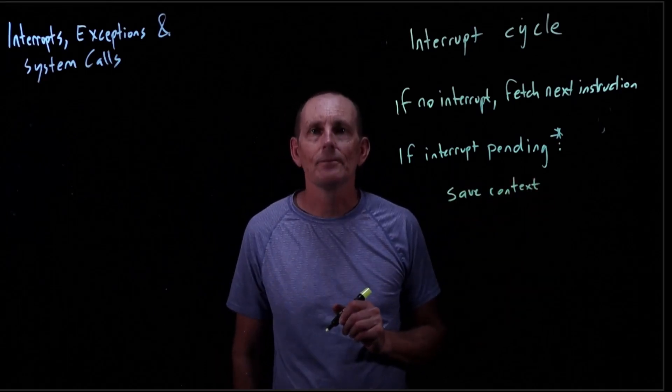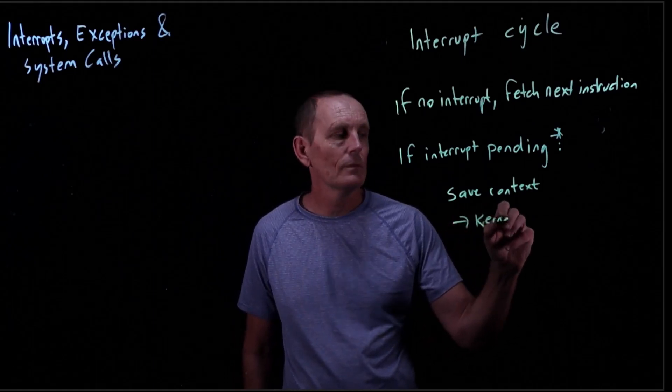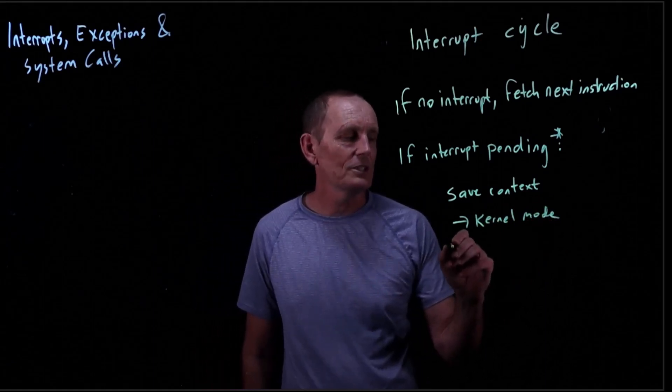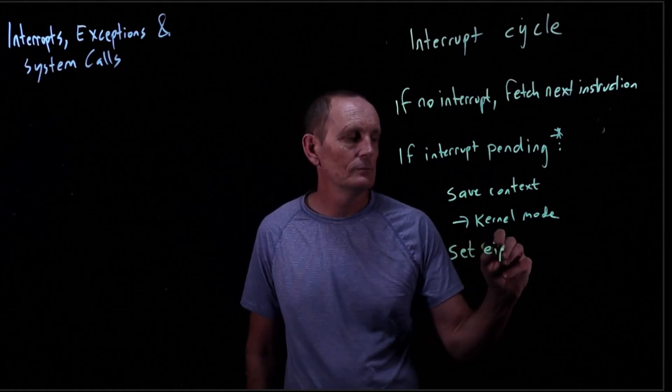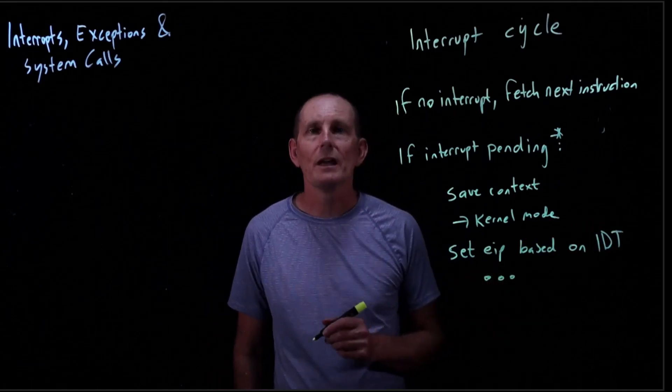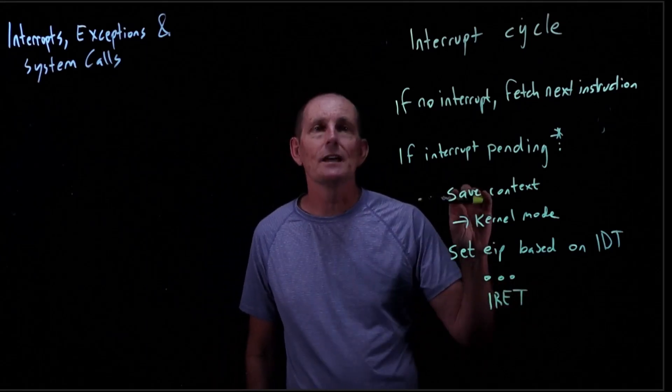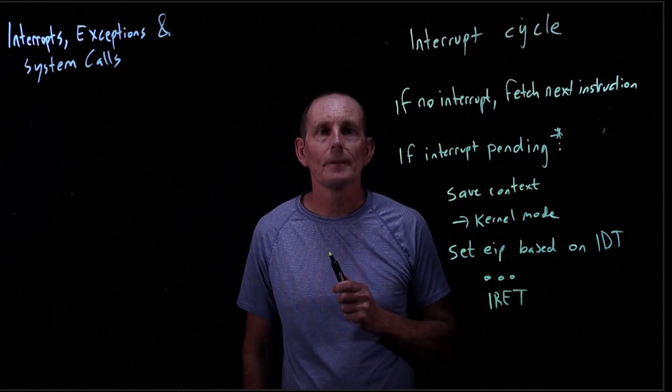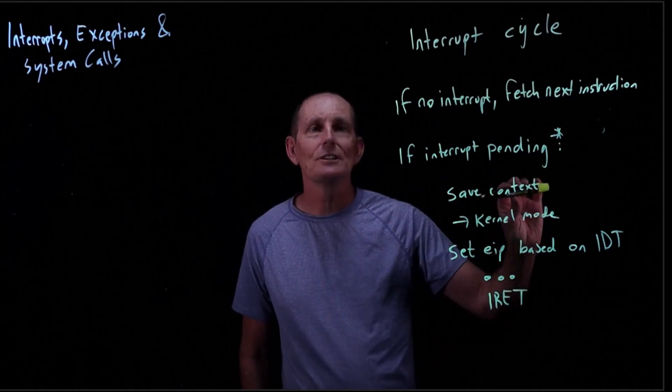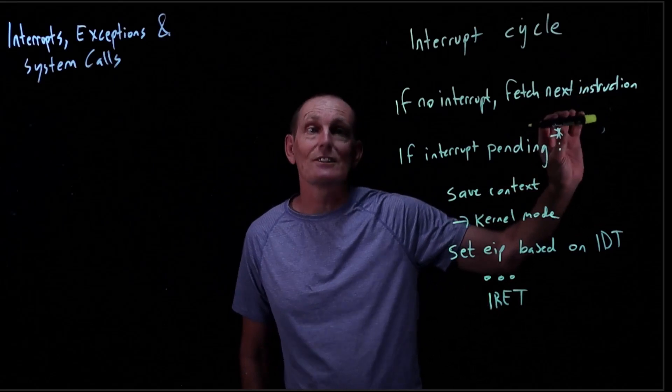What does the hardware do? It saves the context on the stack. It will make sure you're in kernel mode—if you're in kernel mode, you stay in kernel mode; if you're in user mode, you go into kernel mode. Then it sets the instruction pointer based on the interrupt descriptor table. Then your trap handler runs. When it's done, it does an interrupt return, which restores the context and goes back to where you were. The context saved includes the instruction pointer for the next instruction.